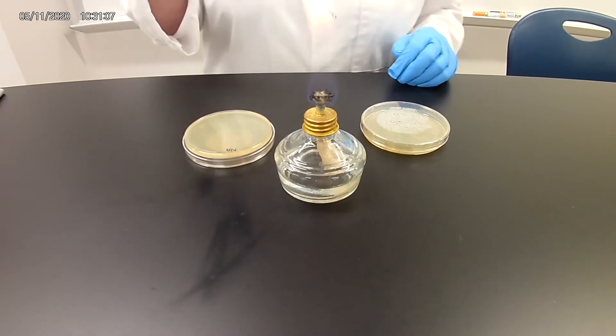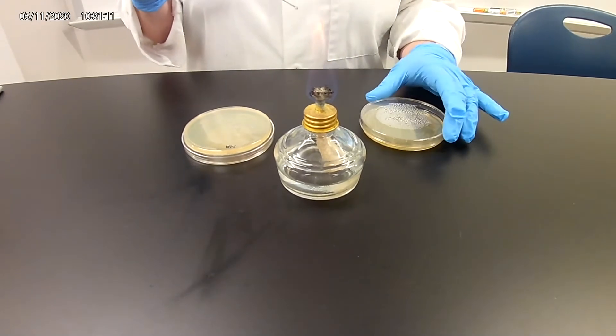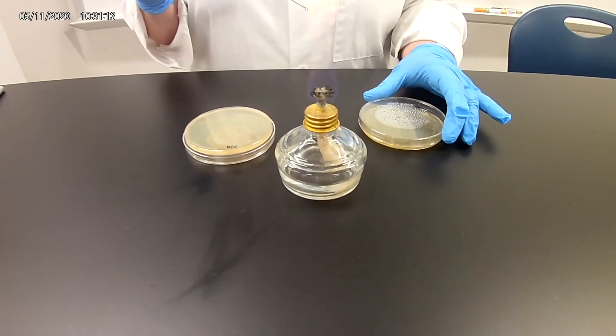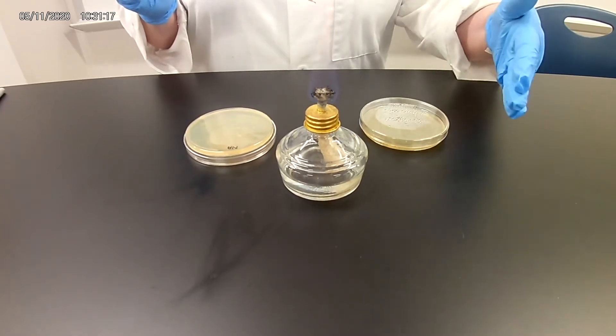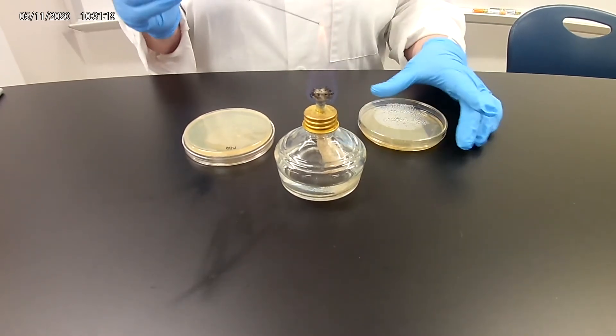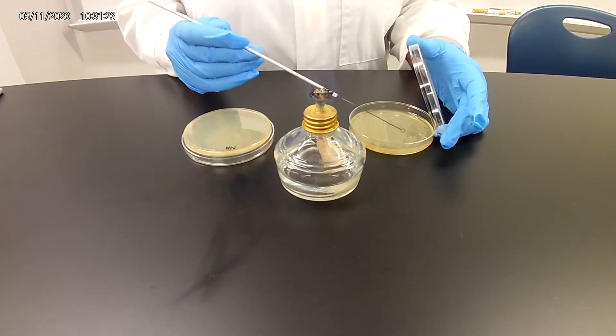As always, we flame the loop until it's a nice glowing red. Let it cool down. The culture we're working with today is Serratia marcescens. Once again, I'm working close by the flame within my sterile area, keeping my sterile technique.